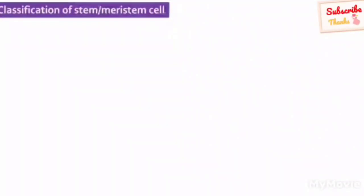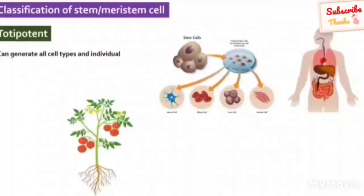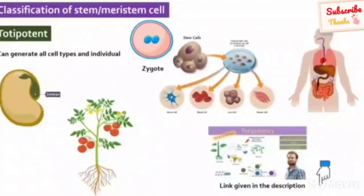Based on their potency, it provides an ability to give rise to various fates. Meristem cells can be further classified into following types. A totipotent meristem cell can by principle form all types of cells and even an organism. For example, zygote and early embryonic cells in plants. I have also uploaded a separate video on totipotency. You may check it out later.